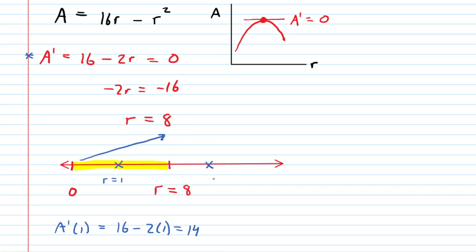On the other hand, if we choose a different test value, like r equals 9, and plug that into the derivative, we will see that we end up with a negative value for the derivative. We have 16 minus 18, so negative 2. That means that the area function is decreasing in the other subinterval.